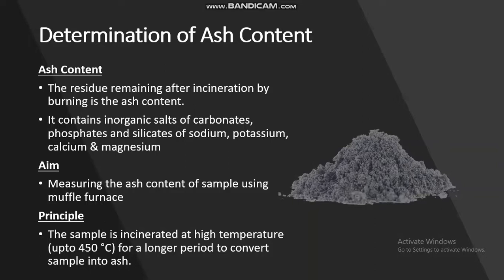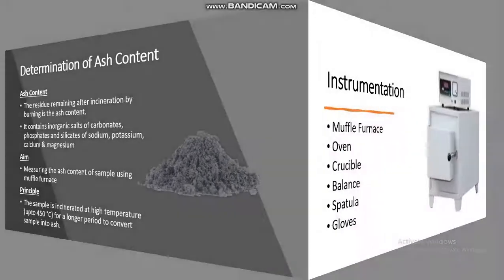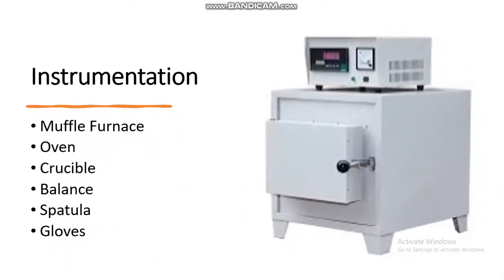The aim of this study is measuring the ash content of a sample using a muffle furnace. The principle is that the sample is incinerated at high temperature up to 450 degrees centigrade for a longer period to convert the sample into ash. Instrumentation used includes a muffle furnace, shown on the right side, a hot air oven, balance, spatula, and gloves.